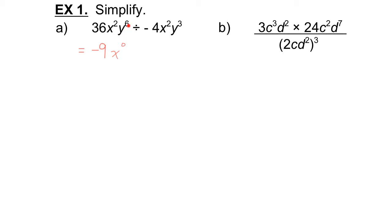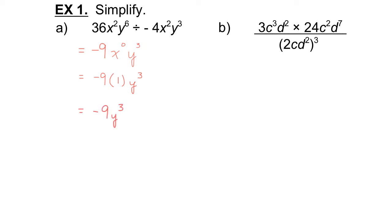y to the 6 divided by y to the 3 — again, dividing powers with the same base, so we subtract the exponents. 6 minus 3 is 3. So we end up with negative 9x to the 0 y to the 3. x to the 0 is just 1, so we don't need to include it — we're multiplying by 1, it doesn't change anything. So our answer is negative 9y to the exponent 3.